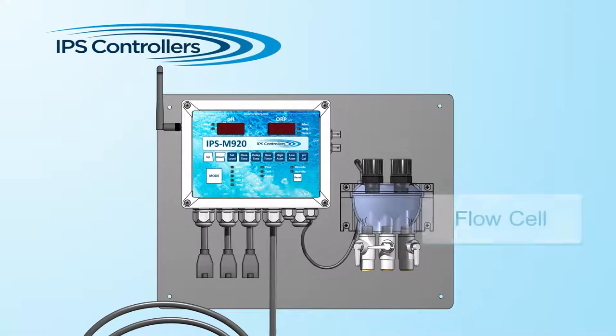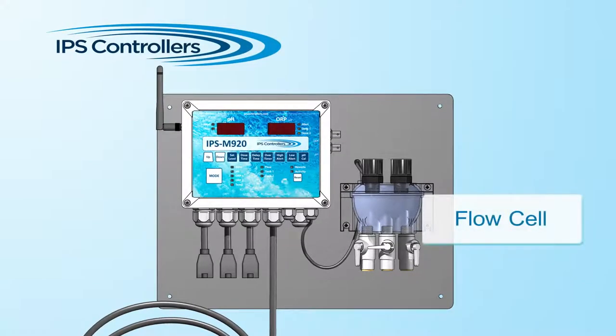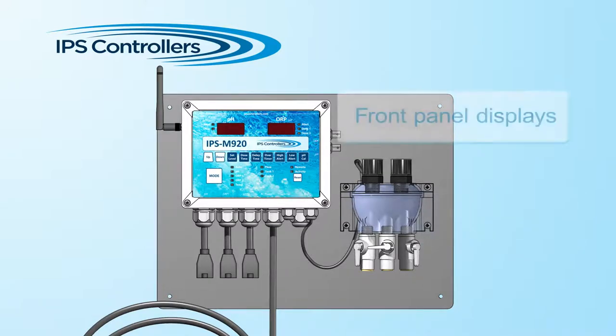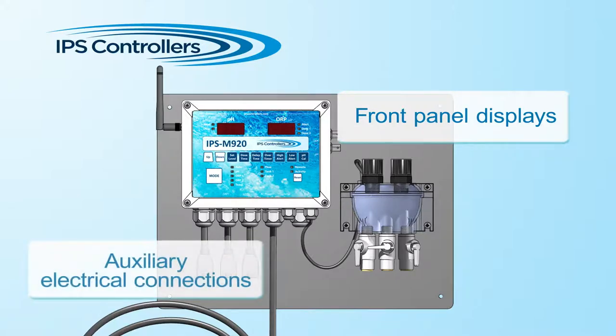The IPS controller and flow cell are mounted to an ABS plastic pre-drilled mounting board. The controller components are the front panel with displays that show pH and ORP levels, function buttons, and electrical connections for auxiliary chemical pumps.